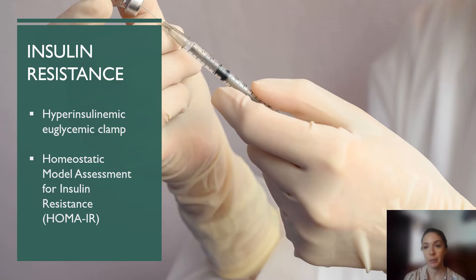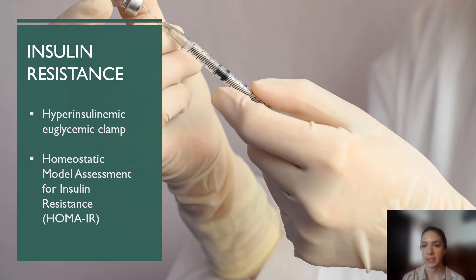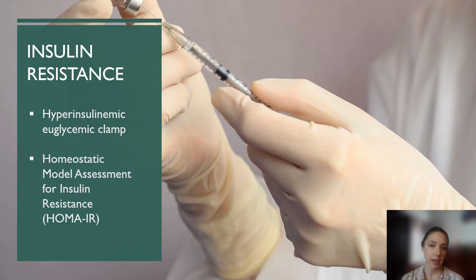As mentioned on my previous slide, HOMA-IR stands for homeostatic model assessment for insulin resistance. It's a convenient indirect way to measure insulin resistance by performing a simple calculation using a person's fasted blood glucose and fasted insulin. It's closely correlated to the gold standard of measuring insulin resistance, which is the hyperinsulinemic euglycemic clamp. However, that method is expensive and time-consuming and not ideal for large research studies. Therefore, in my study I used HOMA-IR to define insulin resistance in my population.